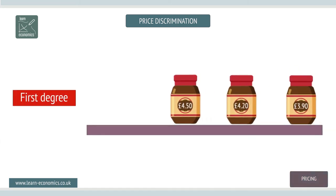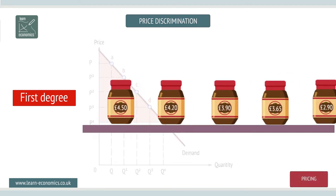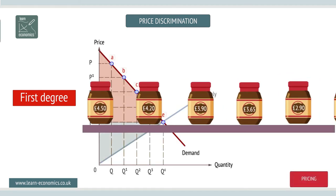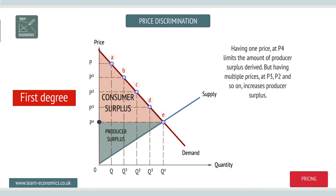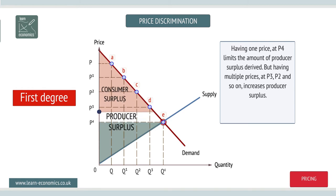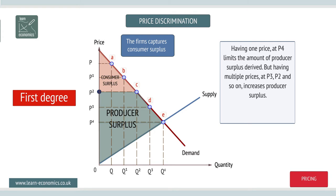First degree discrimination means charging a different price for every good sold. At price P4, consumer surplus is the whole area under the price line. If the firm discriminates with two new prices P3 and P2, the firm gains consumer surplus which it converts into producer surplus.